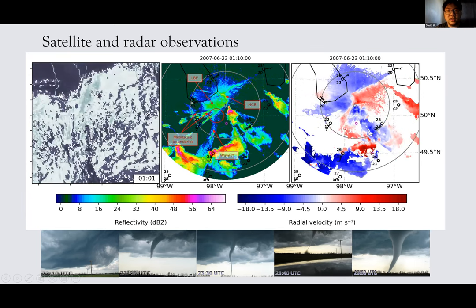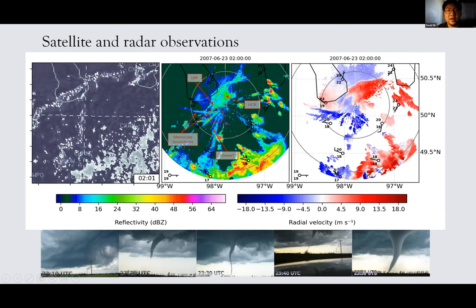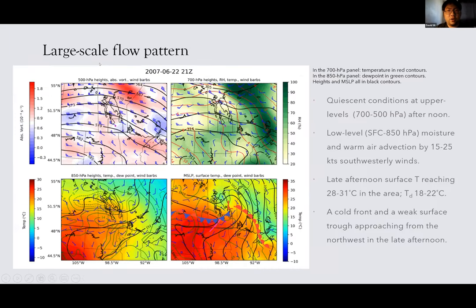Based on radar imagery, possible storm-triggering mechanisms include a couple of mesoscale boundaries to the south of Lake Manitoba, a lake-based front along the southern shoreline, horizontal convective rolls, and gravity waves propagating northeastward. To diagnose the large-scale pattern we used the Rapid Update Cycle analysis at 21Z. The day featured consistent conditions in the upper levels after passage of a mid-level trough in the morning. At low levels, strong warm air and moisture advection was occurring via 15 to 25 knot southwesterly winds. Surface temperatures over Southern Manitoba in late afternoon reached 28–31°C and dew points reached 18–22°C.